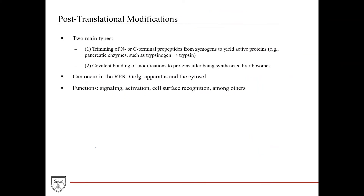Post-translational modifications, sometimes abbreviated as PTM, are modifications to proteins that occur after translation — they're not part of the translation process. There are two main types. First, trimming of the N- or C-terminal propeptides from zymogens to yield active proteins, which is really key in pancreatic enzymes.